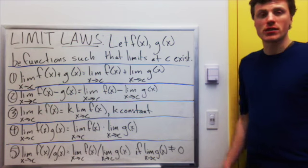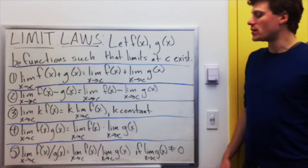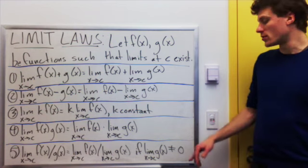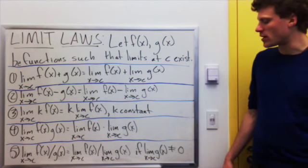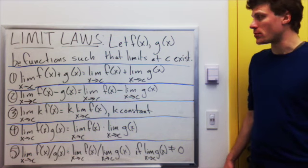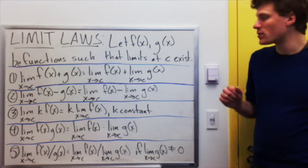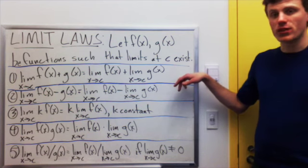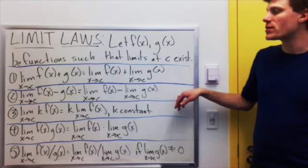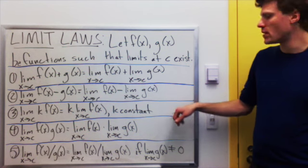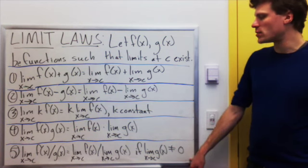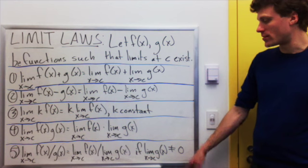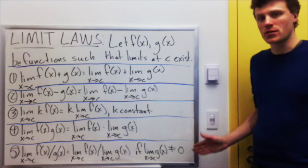The fifth rule is that the limit of f divided by g is the limit of f divided by the limit of g, but this is only guaranteed to hold so long as the limit of g is not equal to zero. More succinctly: the limit of the sum is the sum of the limits, the limit of the difference is the difference of the limits, the limit of a constant multiple is the constant multiple of the limit, the limit of a product is the product of the limits, and the limit of a quotient is the quotient of the limits, so long as the denominator does not go to zero.